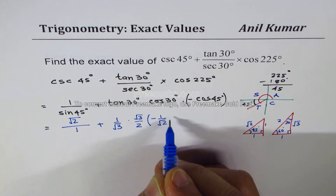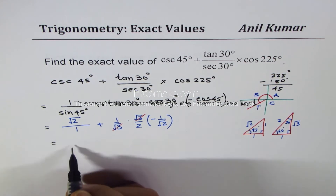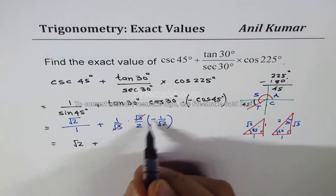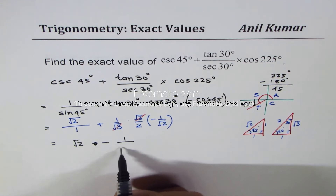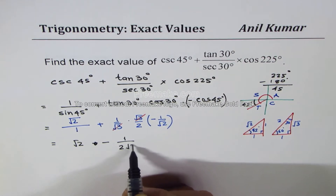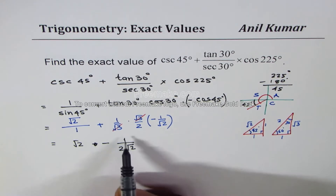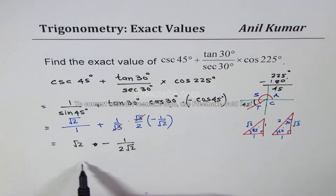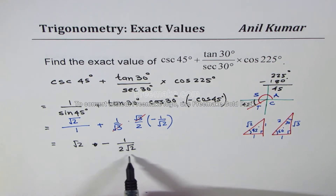Minus cos 45 is minus 1 over square root 2. You could simplify and rewrite: square root 2 plus — since plus times minus is negative — we have negative 1 over 2 square root 2. At this stage it is a good idea to rationalize. You could take a common denominator and rationalize, or rationalize the expression itself.